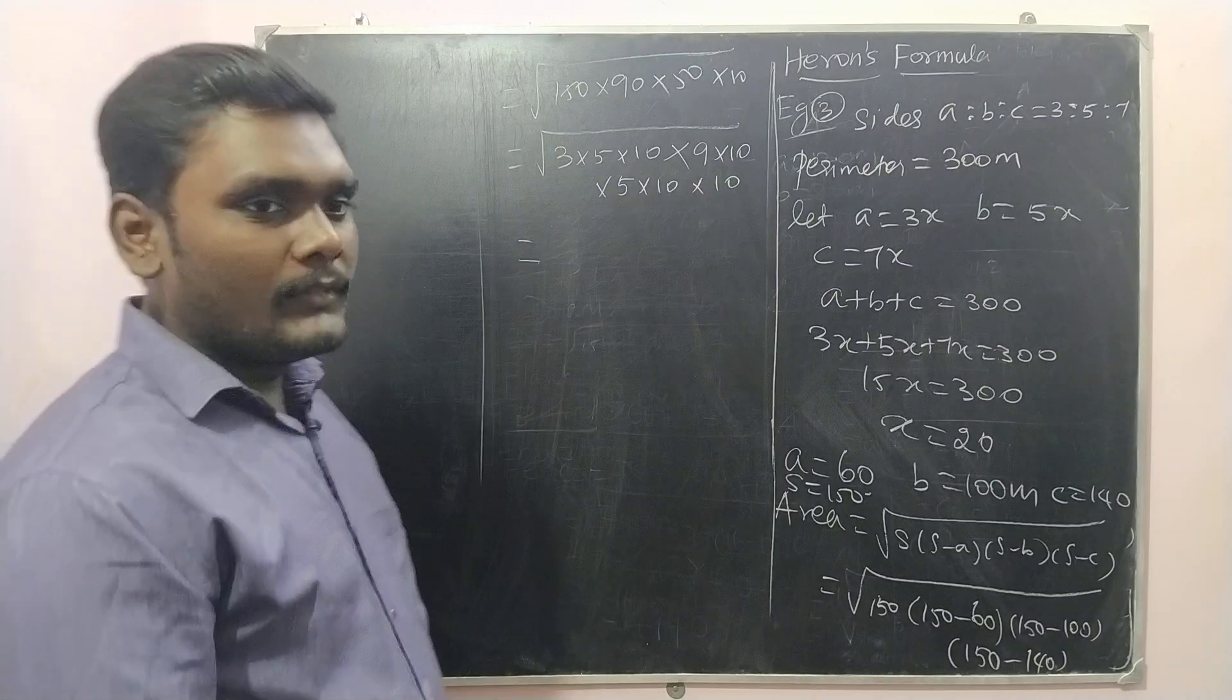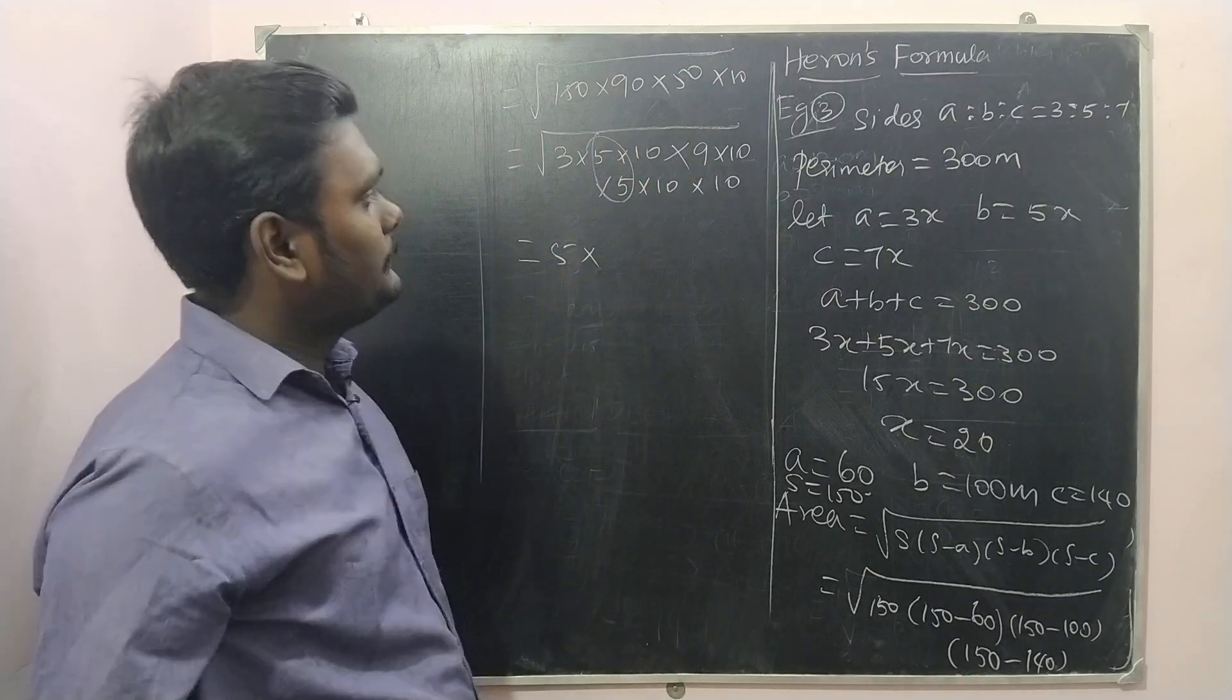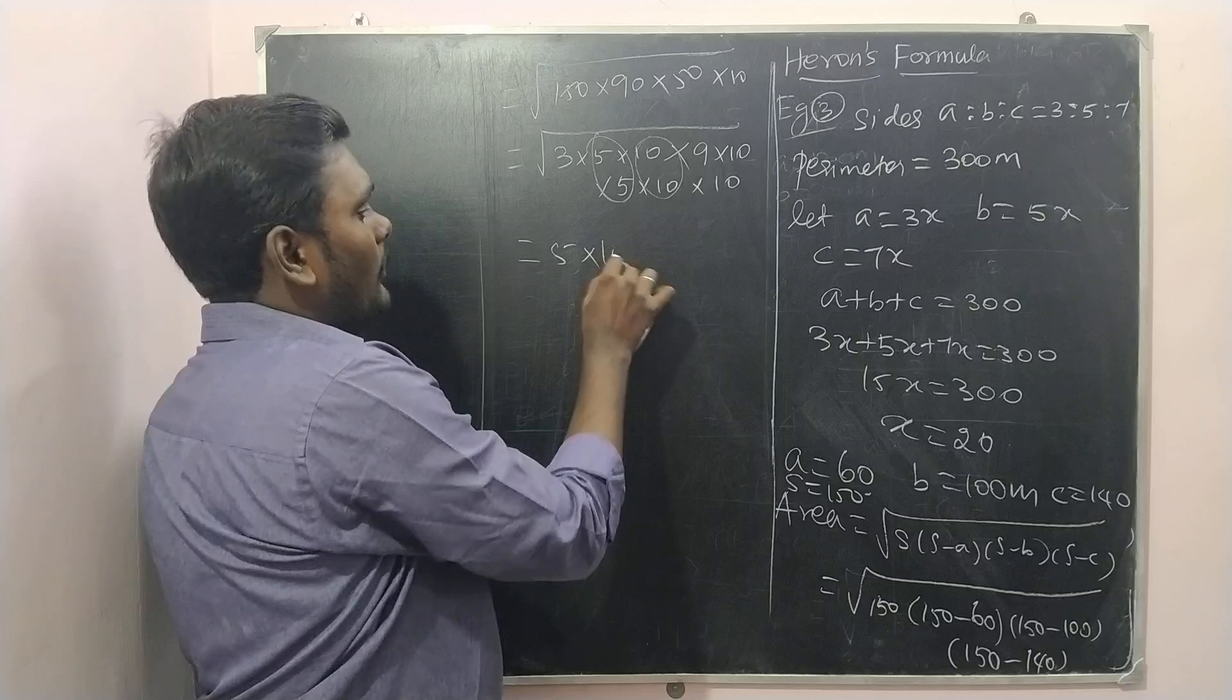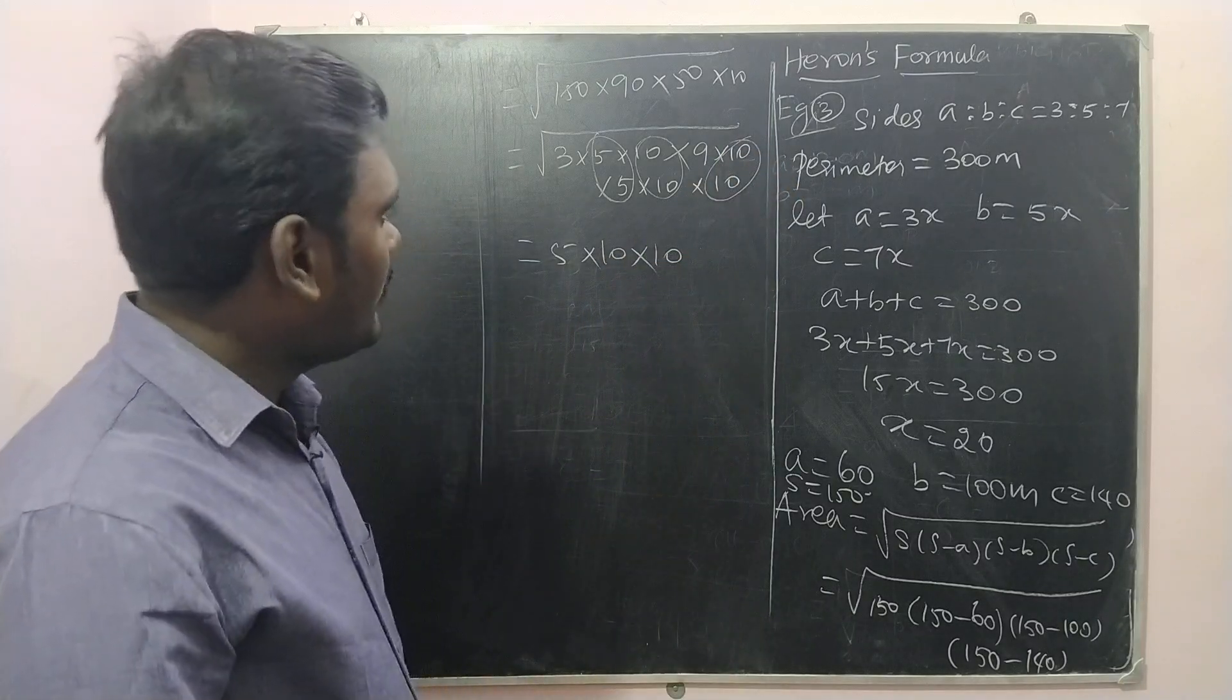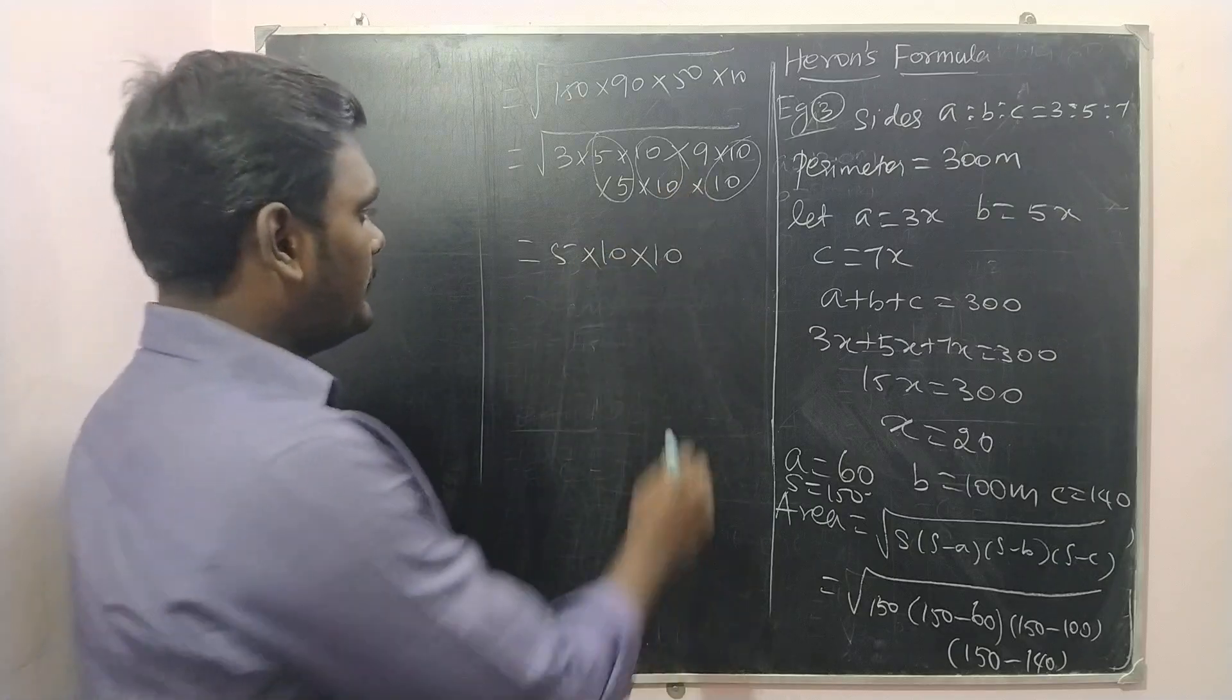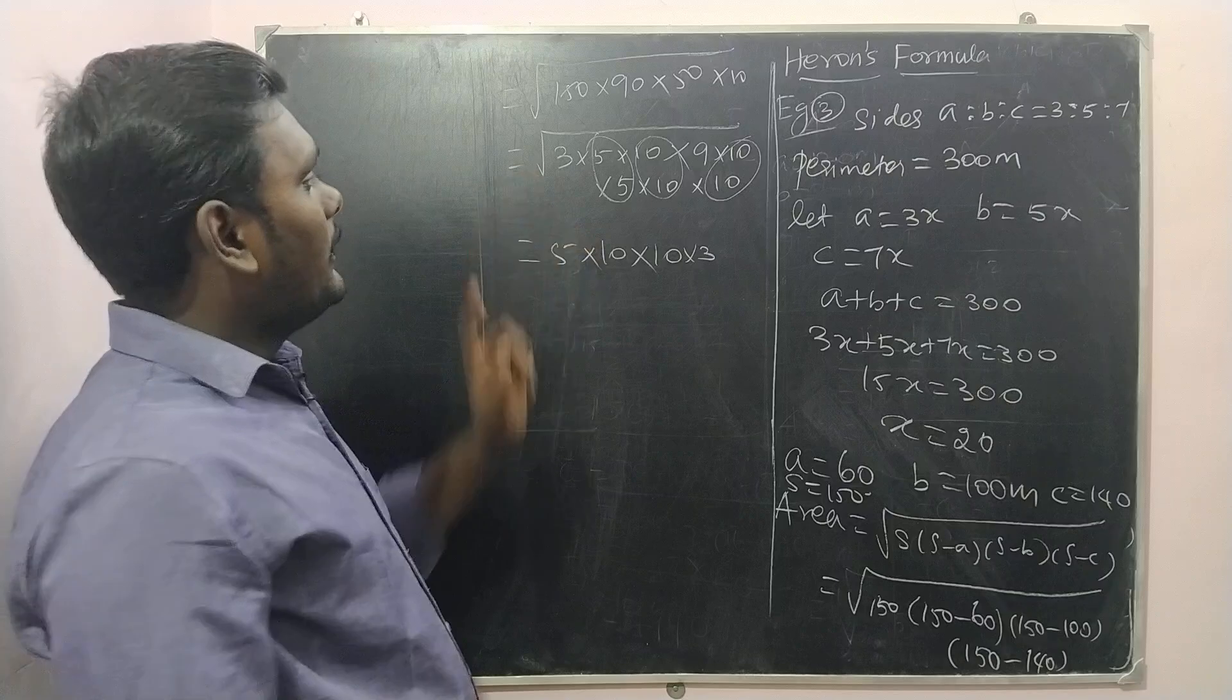Now we have 5 pairs. Look at this. For these two 5s, one 5 can be taken out. For these two 10s, one 10 can be taken out. For these two 10s, again one 10 can be taken out. Remaining, anything could be taken out? This 9, for this 3 can be taken out, and then here root 3.